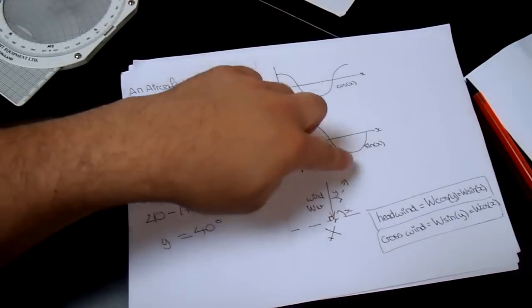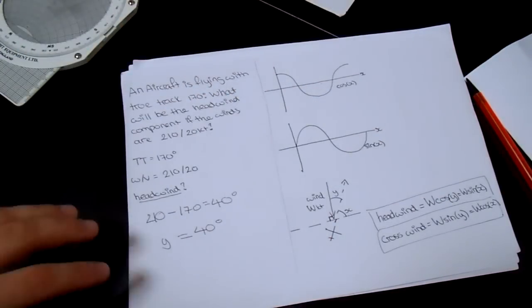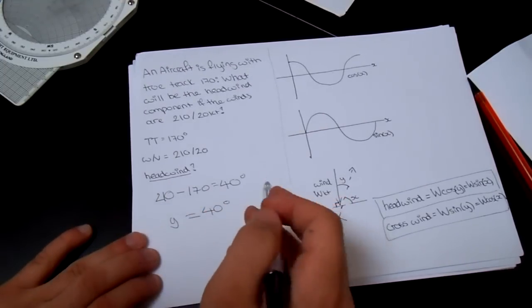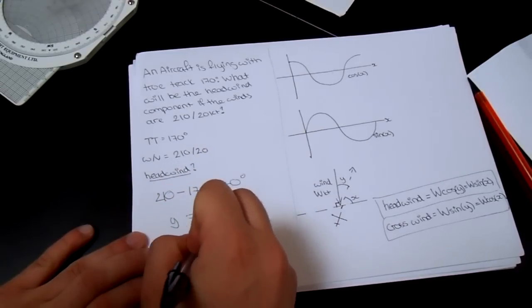Obviously this is wrong because it would have to be in the parallel, as in, in the other side. But this is just for emphasis sake. So, we've got Y equals 40 degrees, and we know that the wind component is 20 knots. W equals 20 knots.